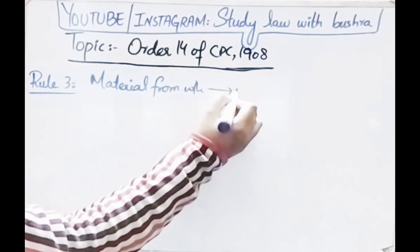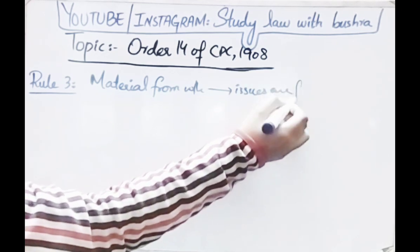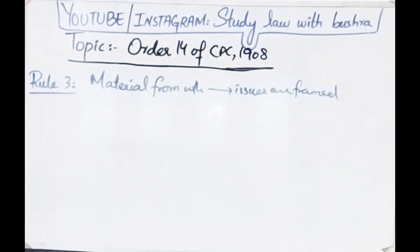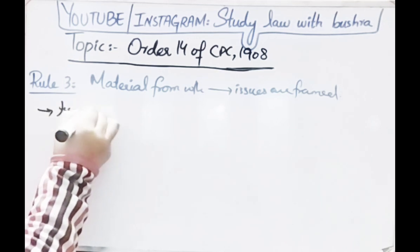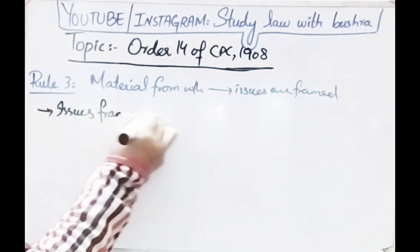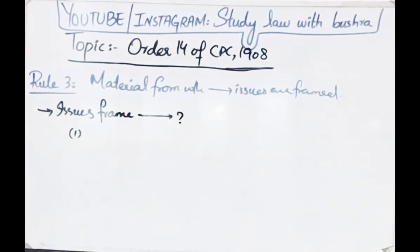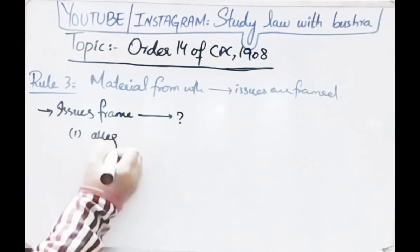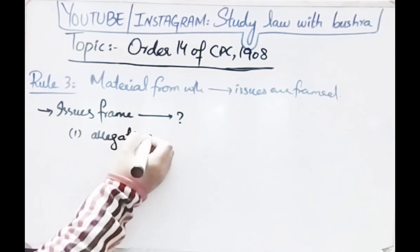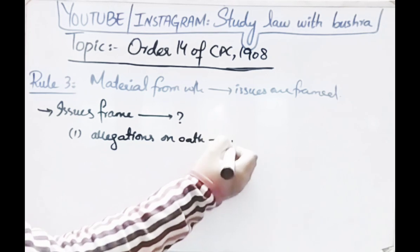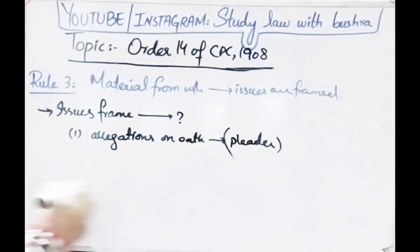Rule 3 deals with the materials from which issues may be framed. The court may frame issues from all or any of the following: first, allegations made on oath by parties, by any person present on their behalf, or by the pleaders of such parties.